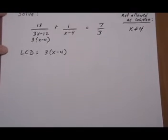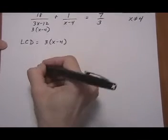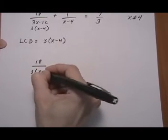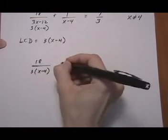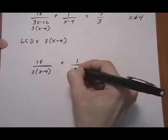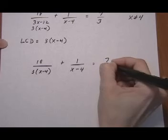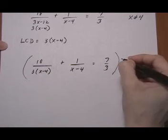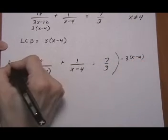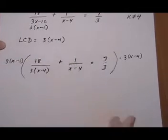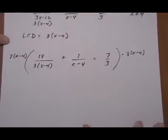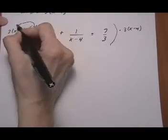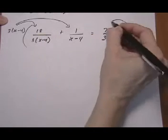Now we're going to multiply both sides of the equation by the LCD. I'm going to rewrite the equation and leave the denominators in factored form because that's going to make it a lot easier for me to see what cancels. So now both sides multiply by 3 times x minus 4. So let's distribute that. Every term gets the LCD.